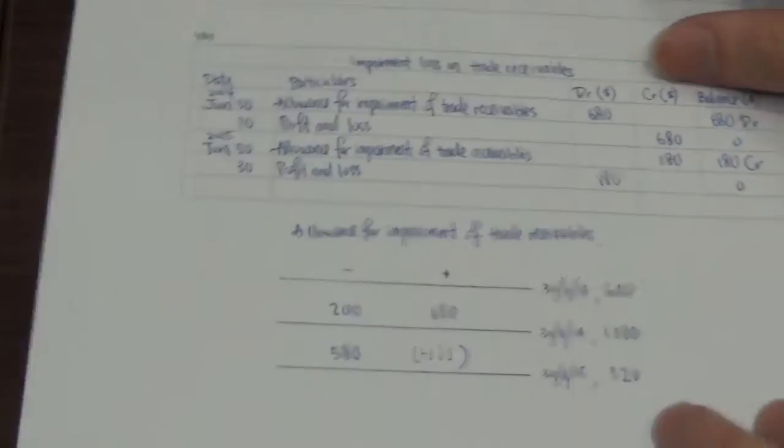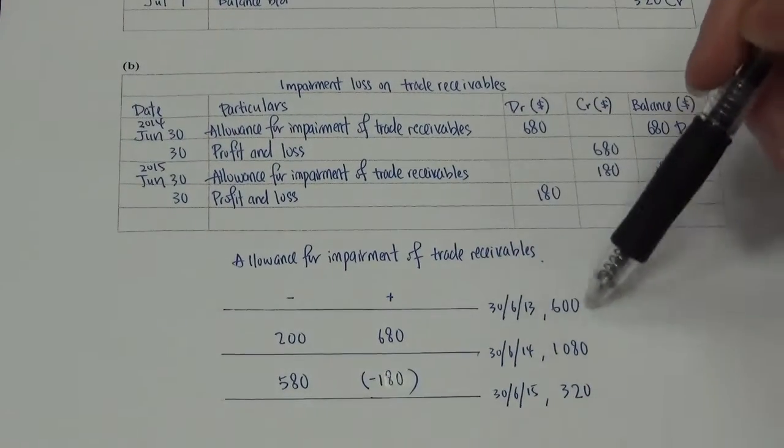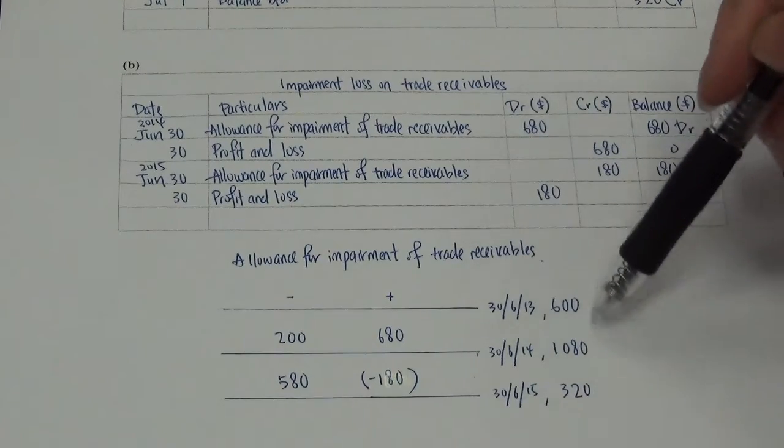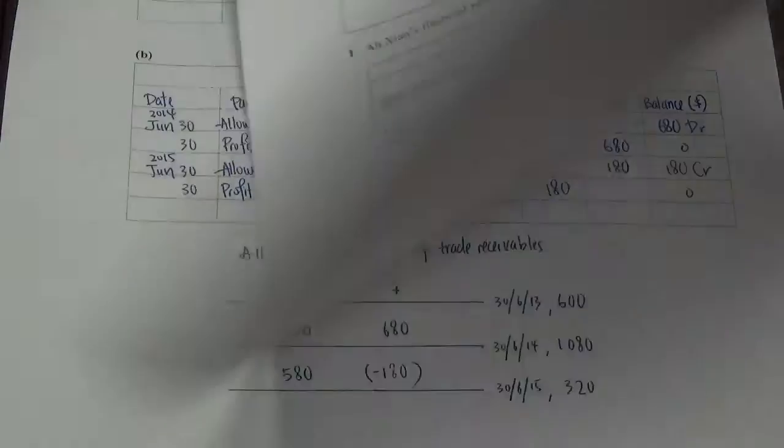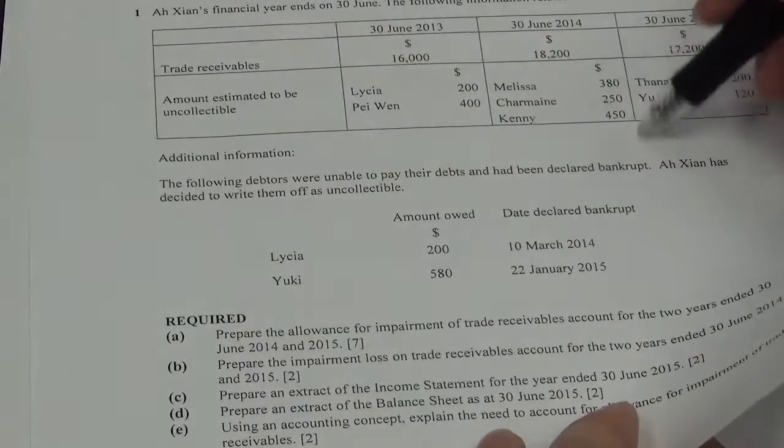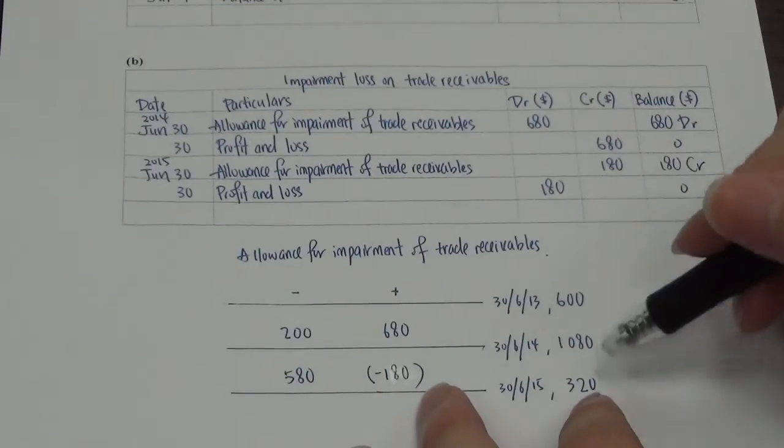Okay, your working should look like this. All these amounts over here, these are the amounts which may be uncollectable. Maybe. So, you got the amount here, 600. Here is 1080, and here is 320. All placed over here nicely.